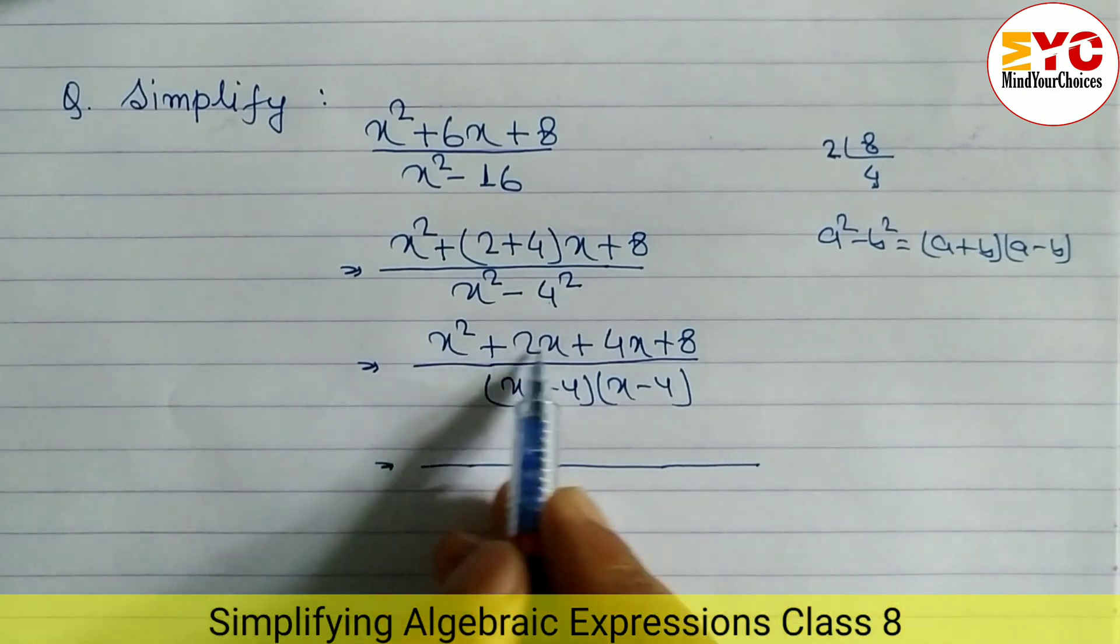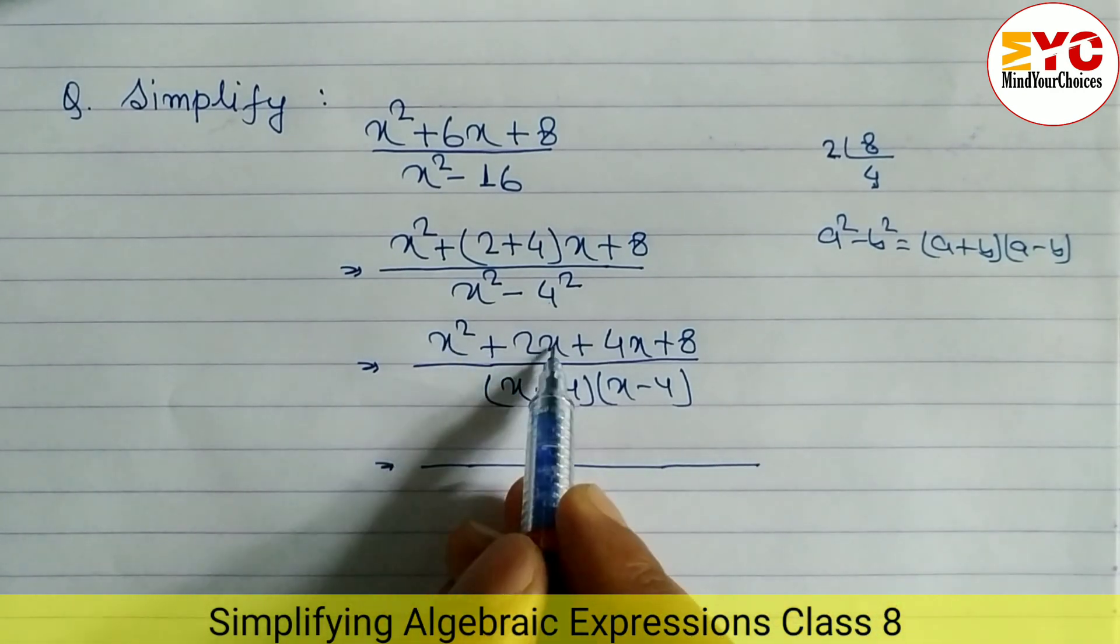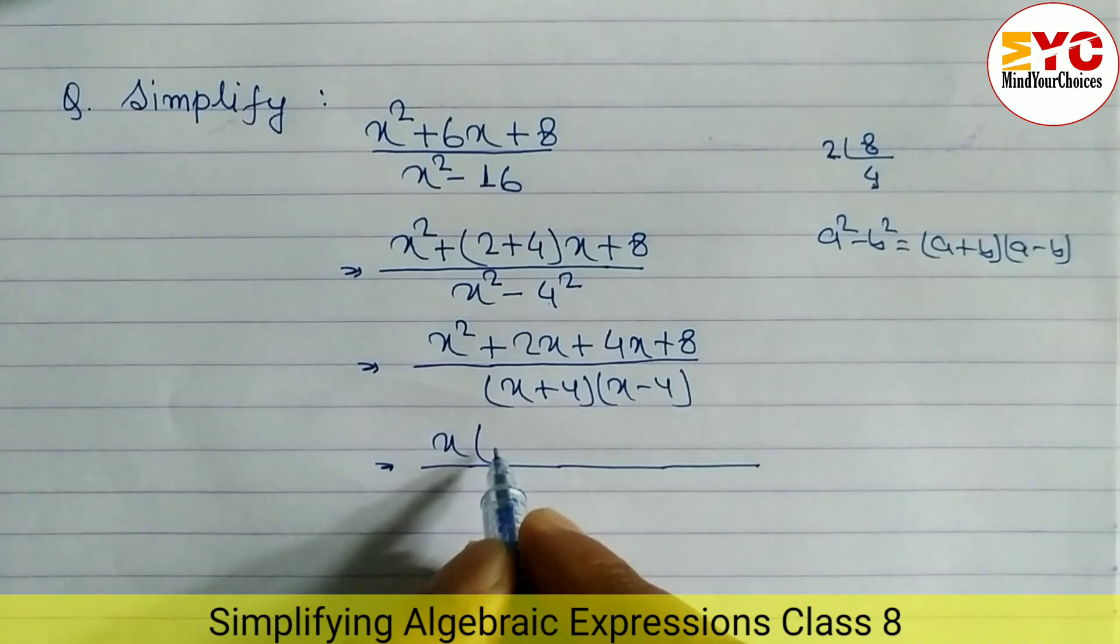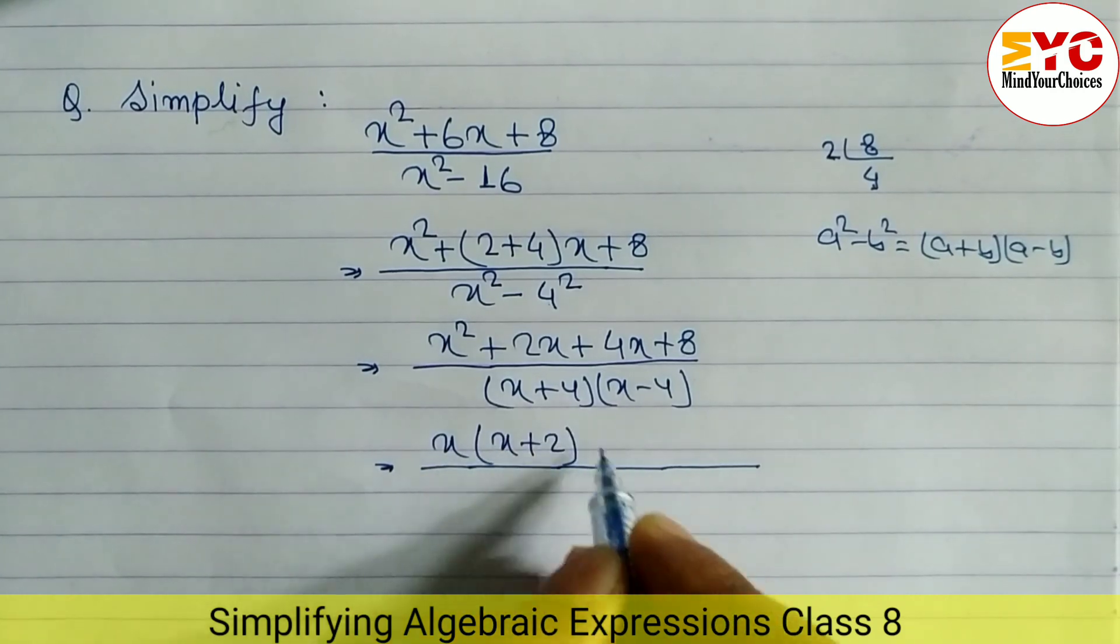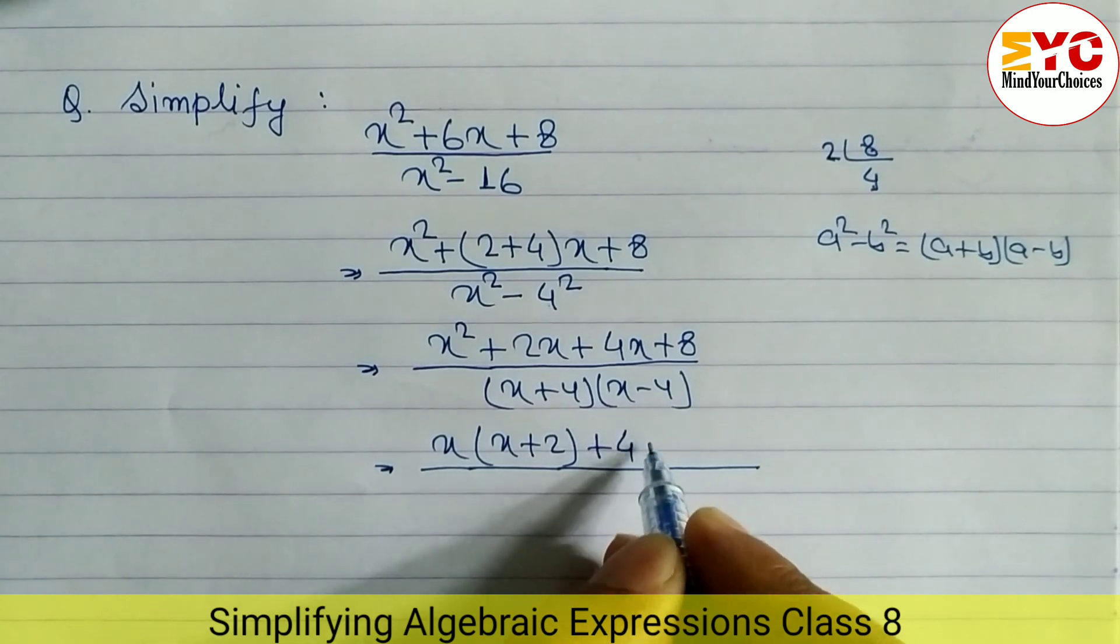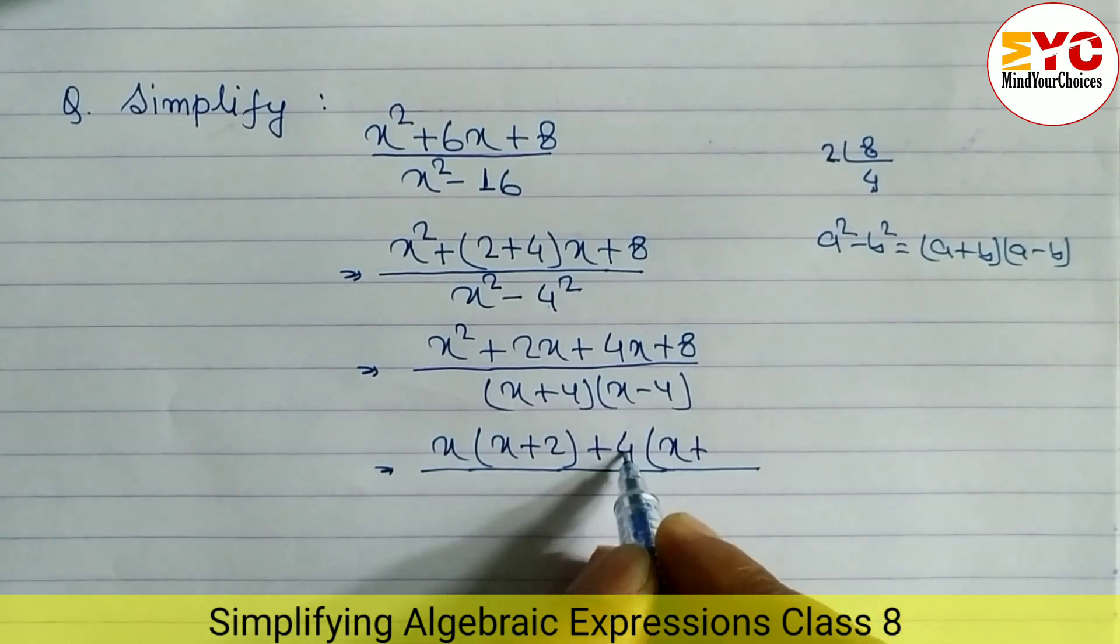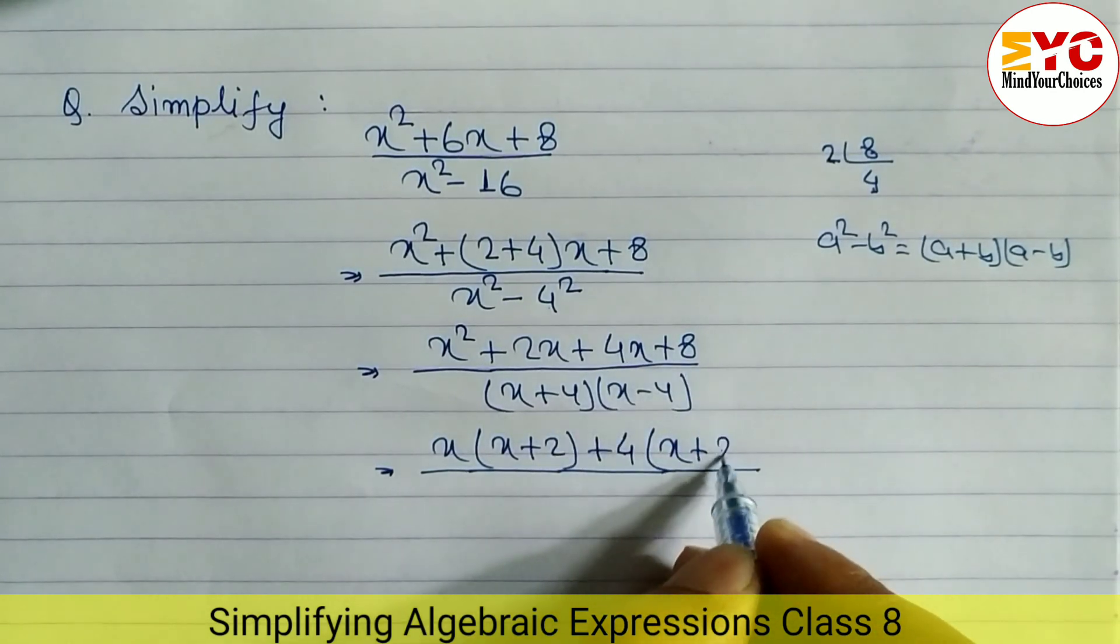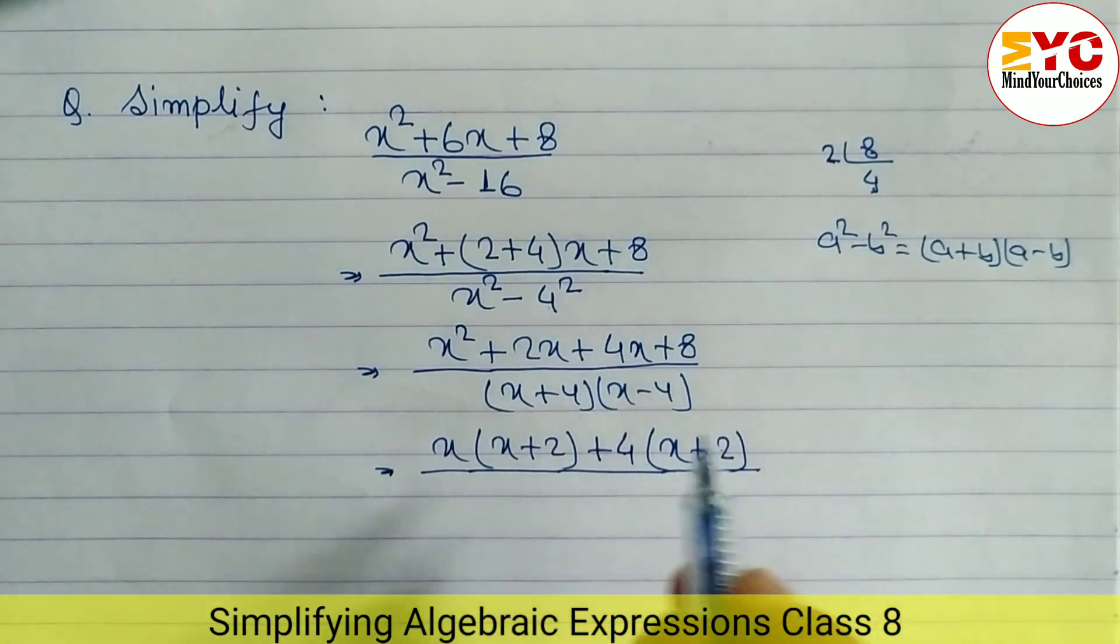Now from the first two terms we have to take common. From these two terms, x² and 2x, the common is x and the remaining is x + 2. Similarly, from 4x and 8, we can take 4 common and the remaining is x + 2. 4 times 2 equals 8.